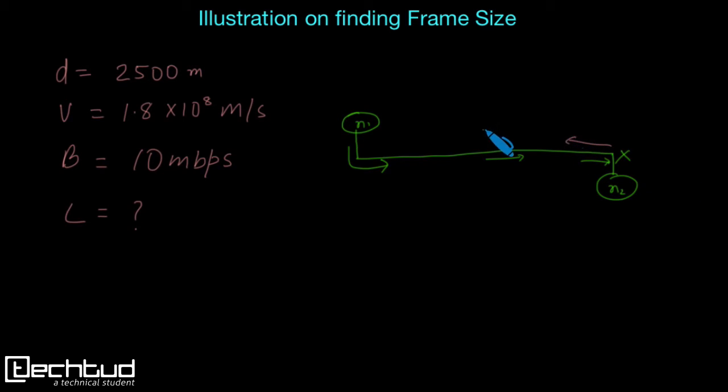The time when jamming signal reaches back to this node, this node should keep transferring this data, okay?